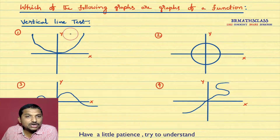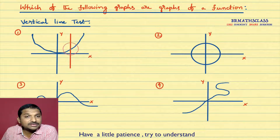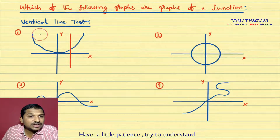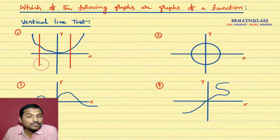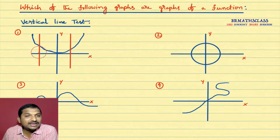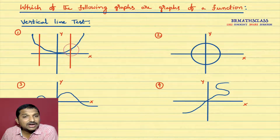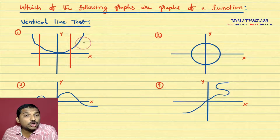Very simple. You just draw a vertical line and observe how many points it cuts the graph at. At only one point. You can draw that vertical line at any point on the graph — a line parallel to the y-axis. If that line cuts the curve at only one point, then we say that this graph is a graph of a function. If that vertical line cuts the graph at more than one point, then we say that it is not a function.